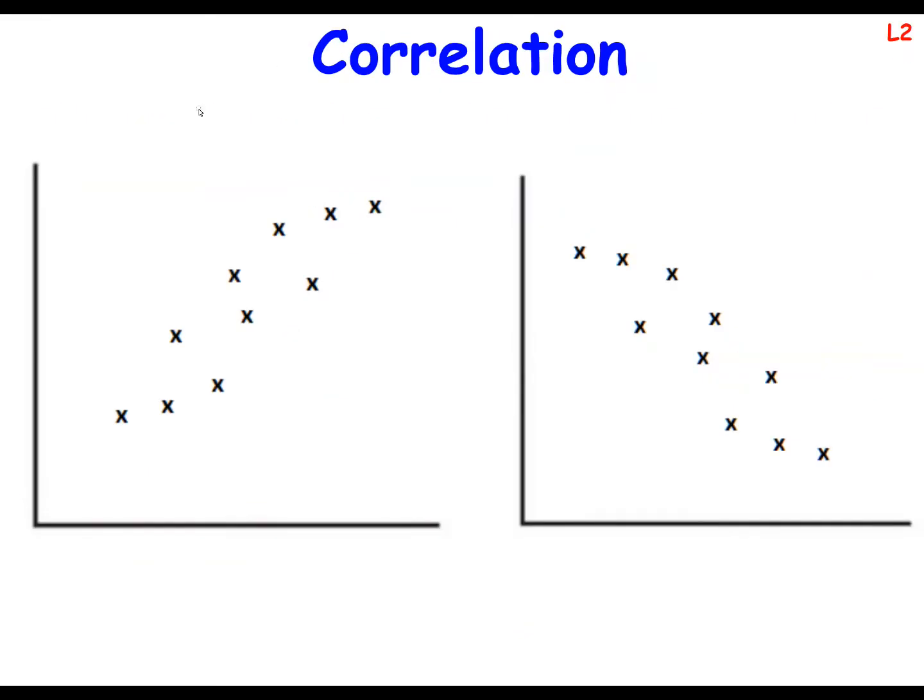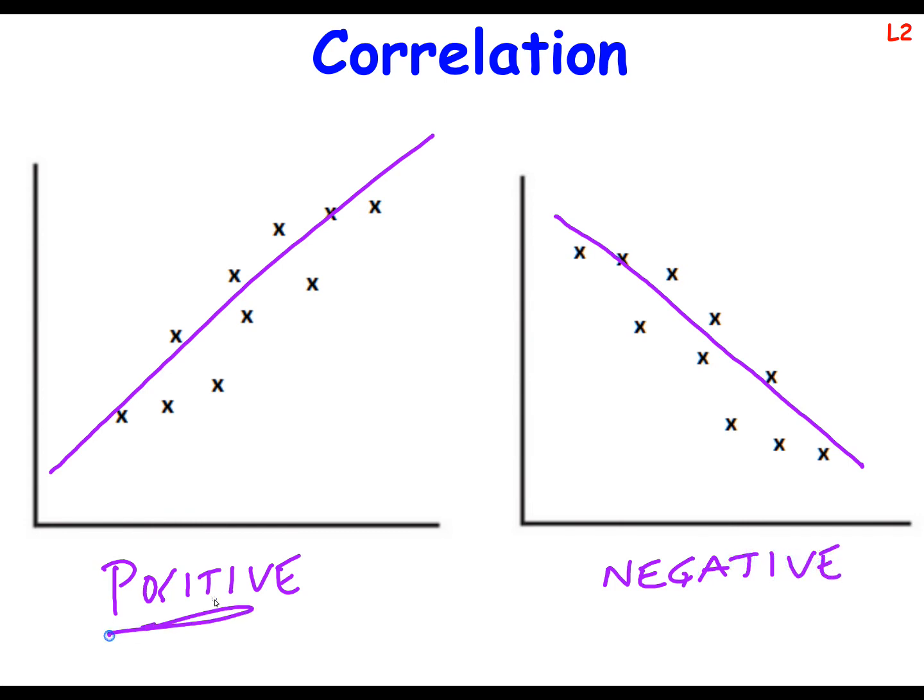So correlation tells us if there's a relationship, and if there is a relationship that goes from bottom left to top right, it's called positive. And if it goes from the top left to the bottom right, it's called negative correlation. So we describe correlation as either positive or negative.